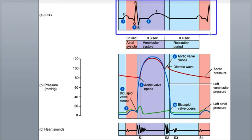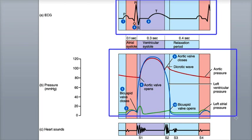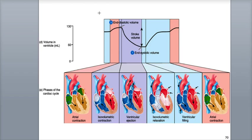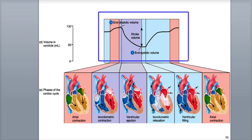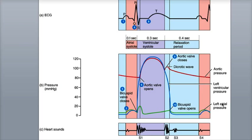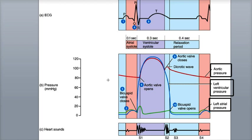This diagram displays the relationship between the ECG and the changes in atrial, ventricular, and aortic pressures, as well as ventricular volume during the cardiac cycle. Atrial pressure is indicated by the green line. Ventricular pressure is indicated by the blue line. And aortic pressure is represented by the red line. All of the pressures shown in this graph are only for the left side of the heart. The right side of the heart displays lower pressures.